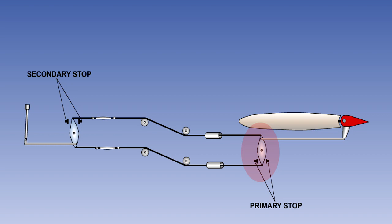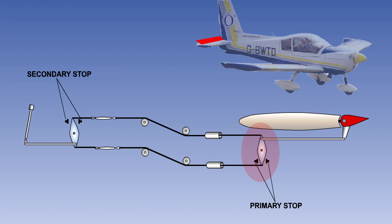The stop which limits the movement of the control surface is called a primary stop. A stop which limits the movement of the control column or rudder pedals is known as a secondary stop. When the control surface reaches the primary stop, there will be a small clearance at the secondary stop. If the pilot should apply excessive force to the controls, the secondary stops will prevent him from damaging the control linkages.